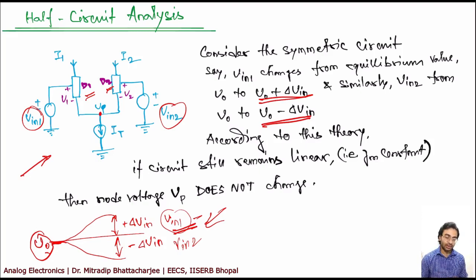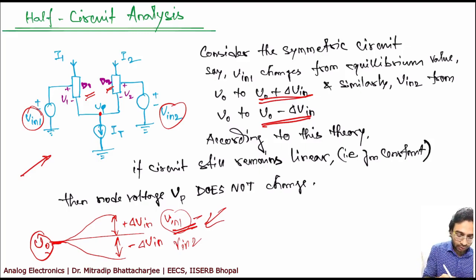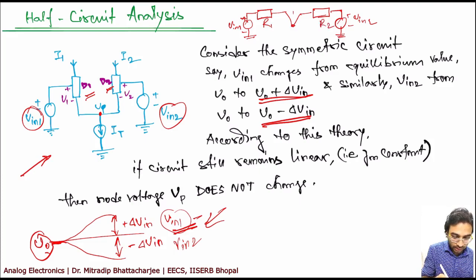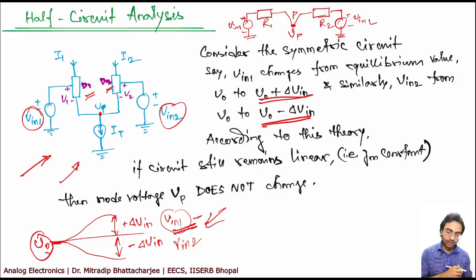There is a proof also given for this particular concept in Razabi's book, so you can check it. I am not showing it here — it's a very straightforward proof wherein they have considered a voltage source connected to a resistance with another resistance connected to a voltage. It's a symmetric circuit, and simple KVL applied can prove it.